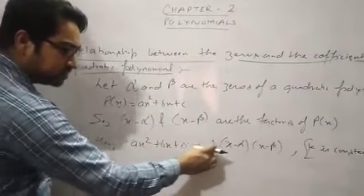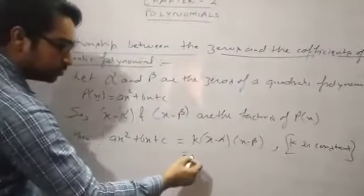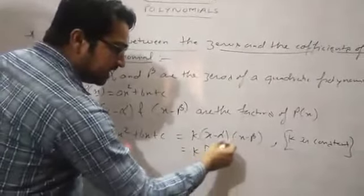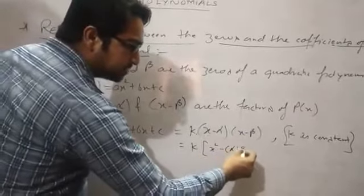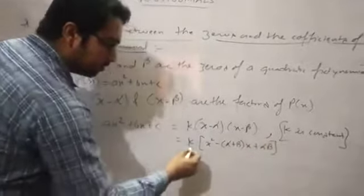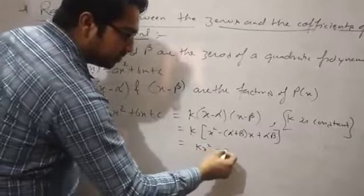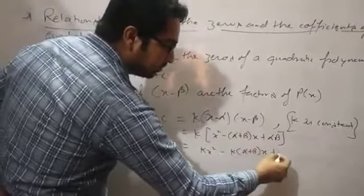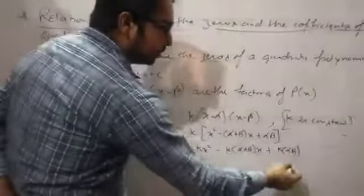So ax² + bx + c = k(x - alpha)(x - beta). When we multiply these two brackets, we get x² - (alpha + beta)x + alpha·beta. Multiplying by k, it becomes kx² - k(alpha + beta)x + k·alpha·beta.